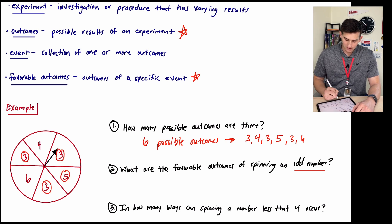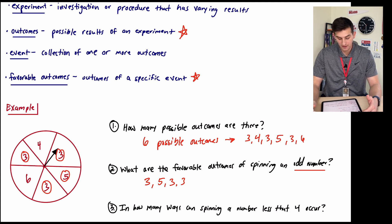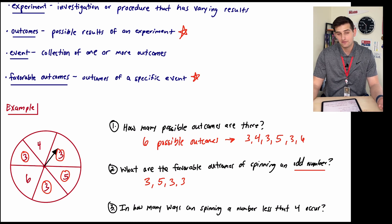So the favorable outcomes of odd numbers, that would be 3, that would be 5, that would be 3, and also 3. So what are those favorable outcomes? Those outcomes are 3, 5, 3, and 3. So we have four favorable outcomes.